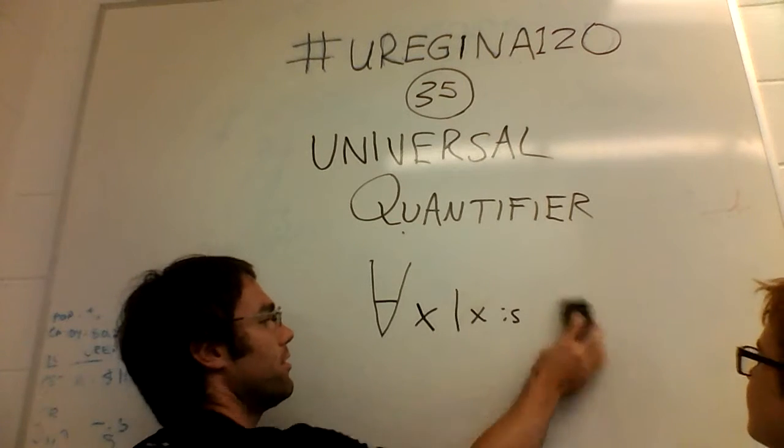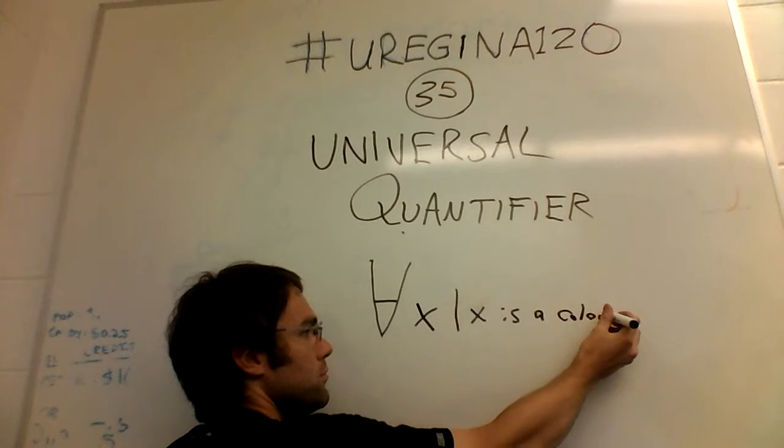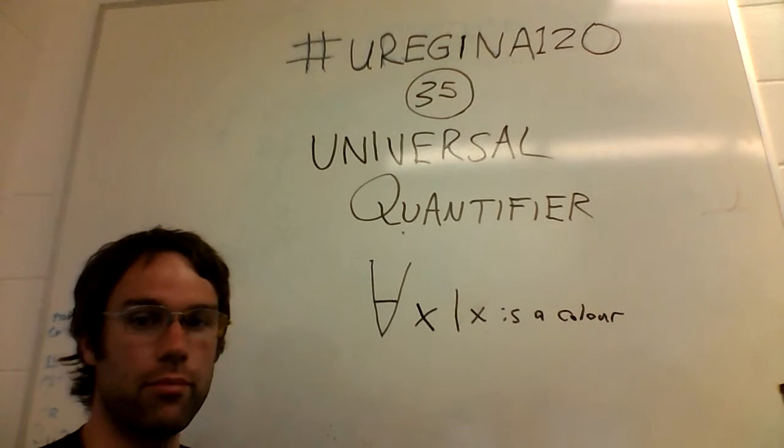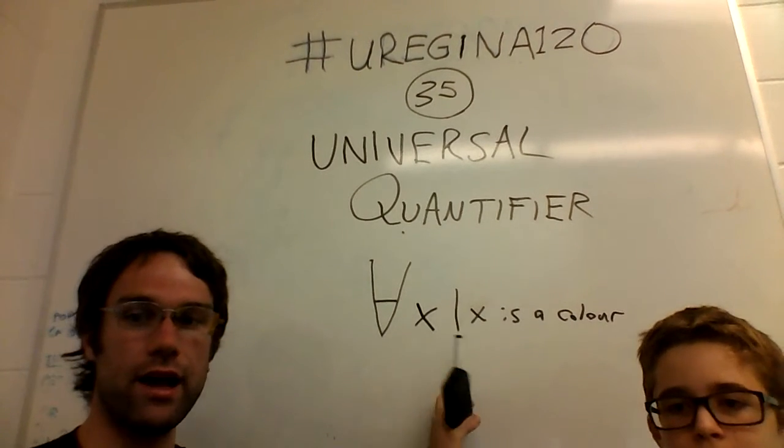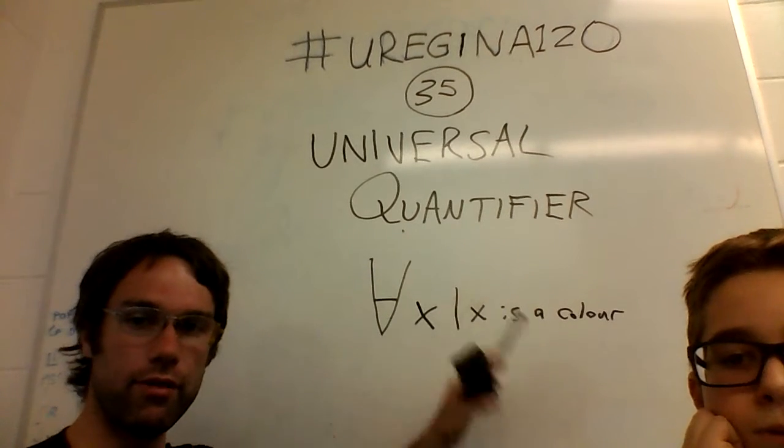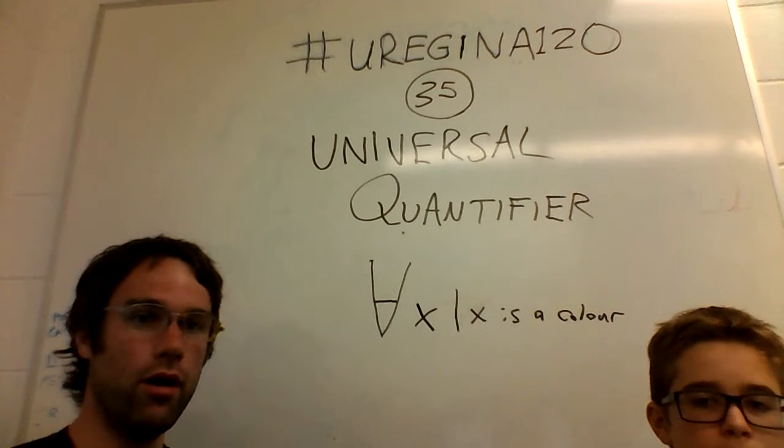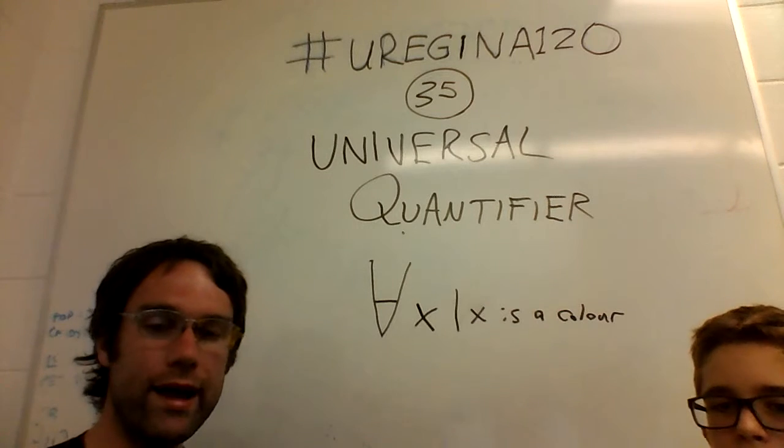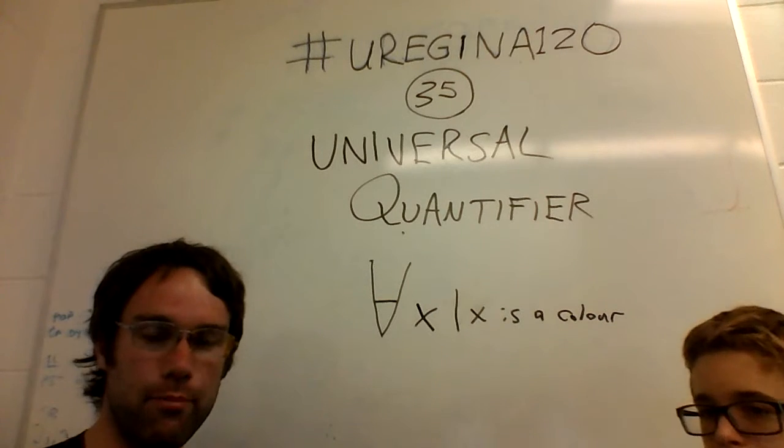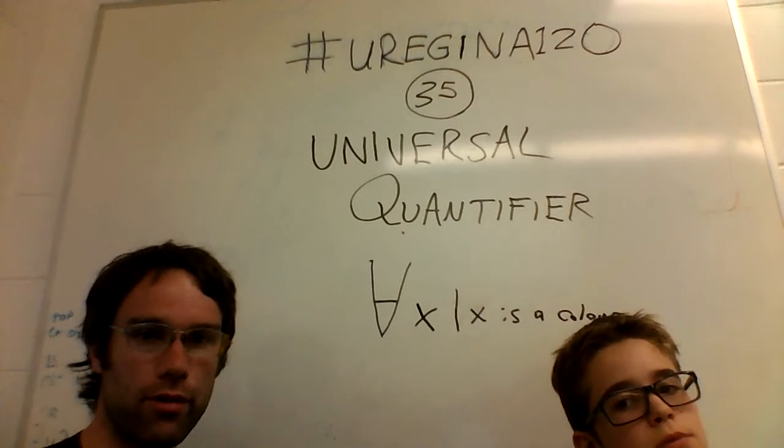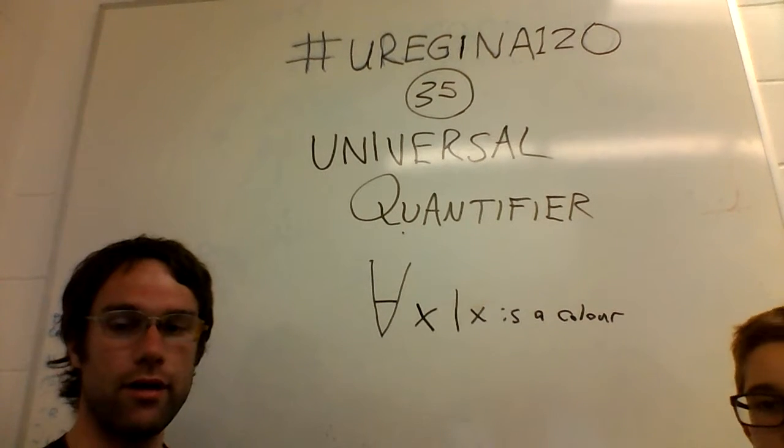But this can also be used for other things. X doesn't even have to be a number in this case. We could have X be a color. So, all X such that X is a color, this will mean all of the colors. You can do the same thing for all of the people in this room, all of the items in a sorted list, all of the ways of counting numbers. It doesn't even have to be a thing. It can be a process, or a function, or a method. All of the symbols, it can refer to itself. X is the set of things that refer to themselves.